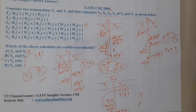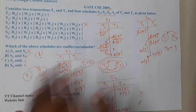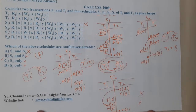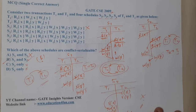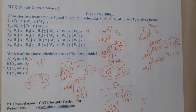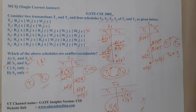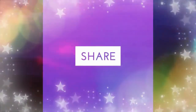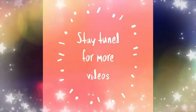So S2 and S3 are conflict serializable, confirming that B is the correct answer. These questions are easy — drawing the precedence graph is all the examiner expects. I hope everyone got a clear idea. In the next lecture we will continue with the next question. Thank you, like share and subscribe for more videos.